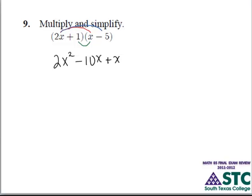Finally, we multiply by the last set of terms, which in this case is 1 and a negative 5. So, doing so, we get negative 5.